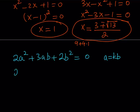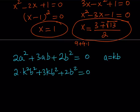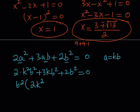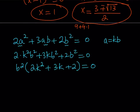Replacing a with kb gives: 2k²b² + 3kb² + 2b² = 0. Each term is quadratic, so I can factor out b² and get a quadratic in k: 2k² + 3k + 2 = 0, assuming b ≠ 0 (which is already handled).